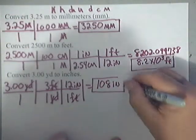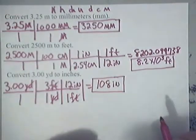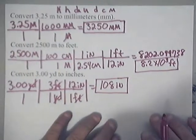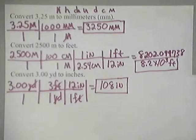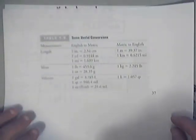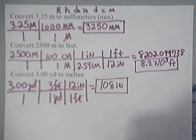All right, guys, this is how you set up dimensional analysis or unit conversion using what some people refer to as ladder method. So look at these examples, go through them slowly, and remember that you have this chart that can help you on Chapter 1, Note, Slide 37. All right, guys, I hope this helps.